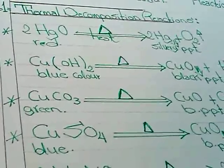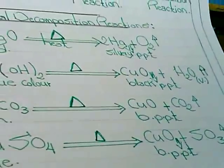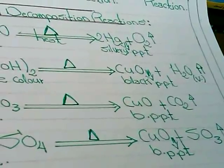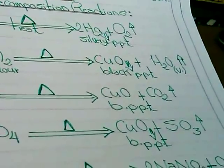Copper carbonate has a green color. It can be decomposed by heat to get black PPT of copper oxide, CuO, and carbon dioxide evolves.